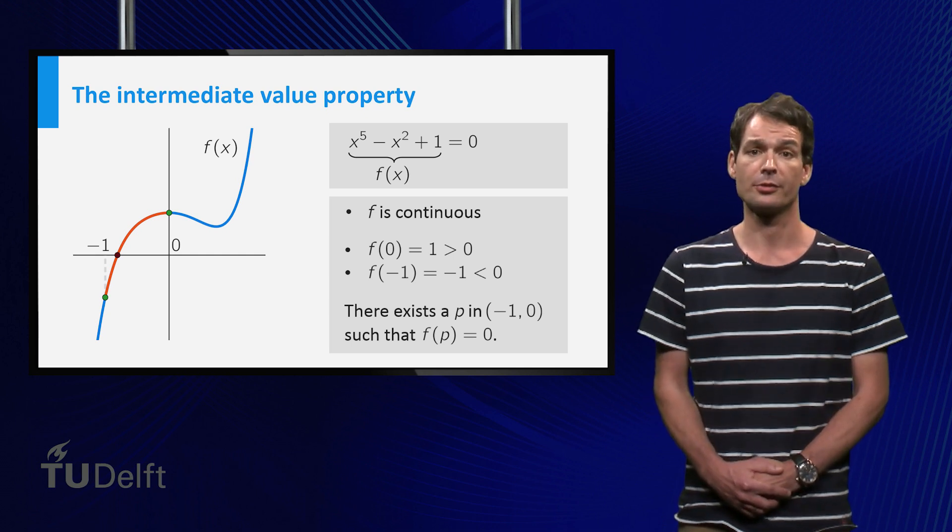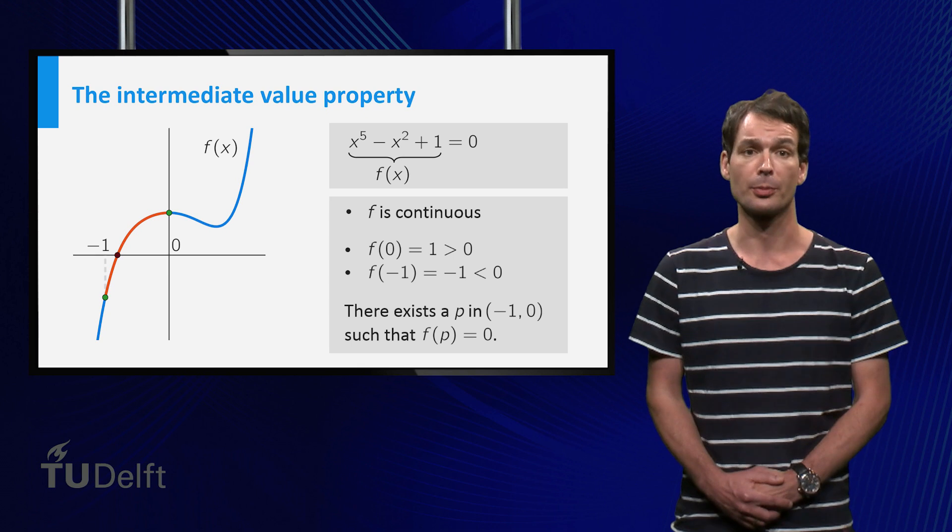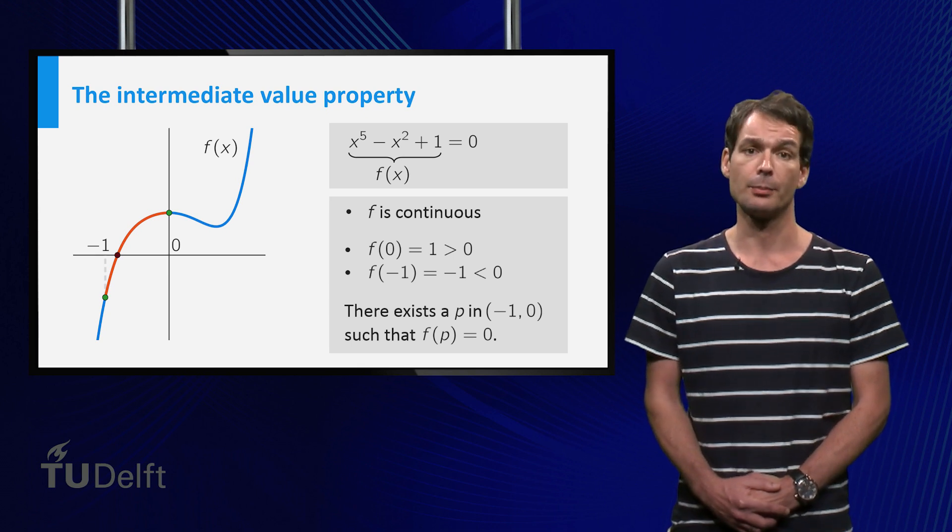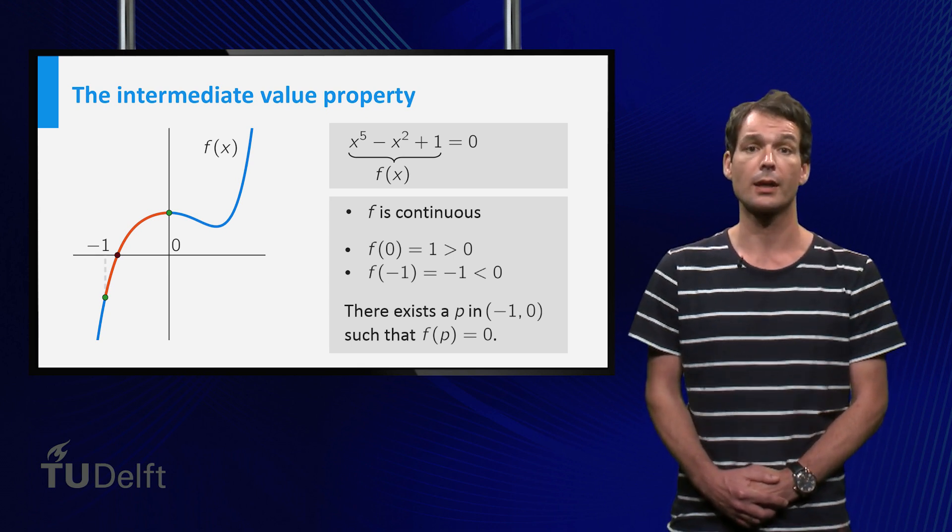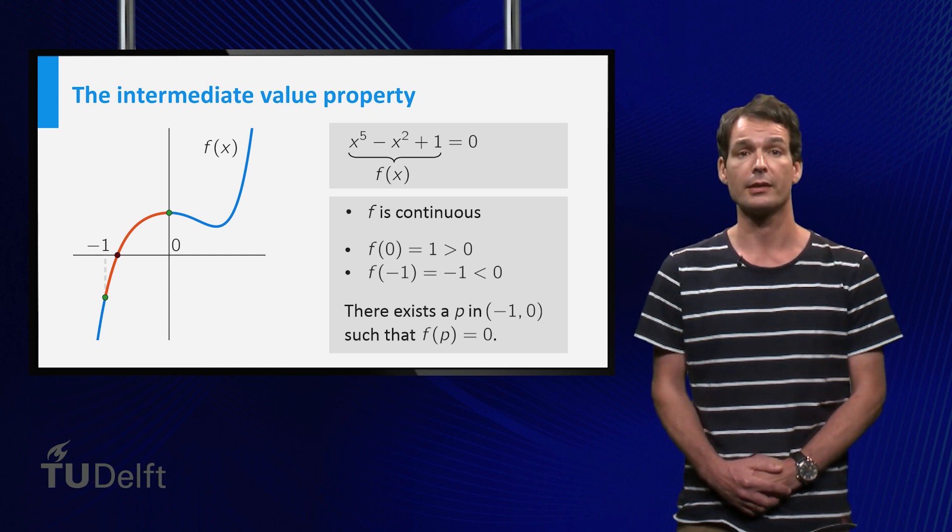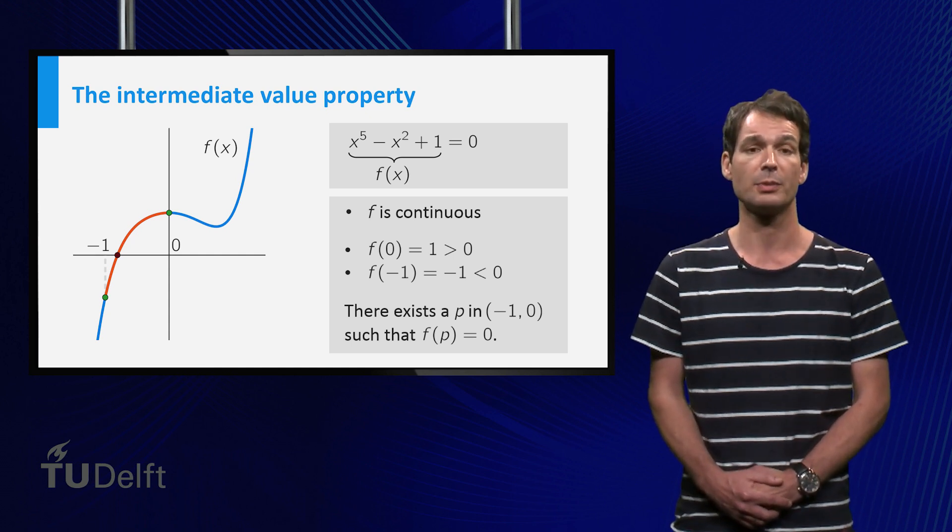If f is not continuous, the intermediate value property might not hold. For example, if the balance of your bank account goes from 50 to 150, it has not attained any of the values in between.